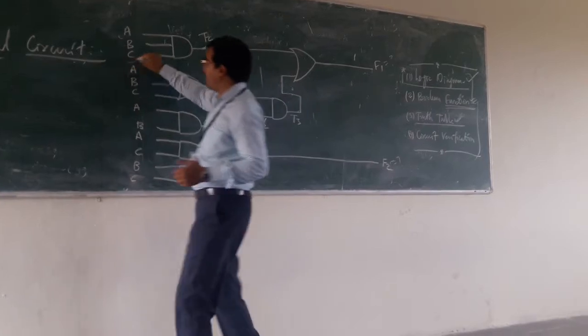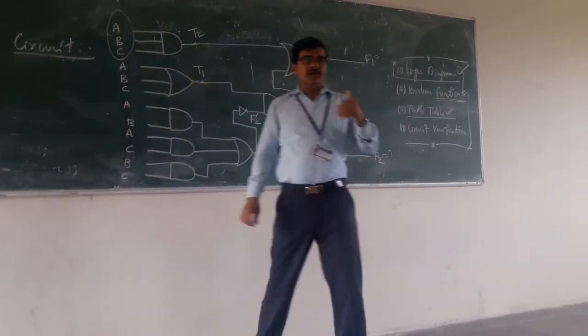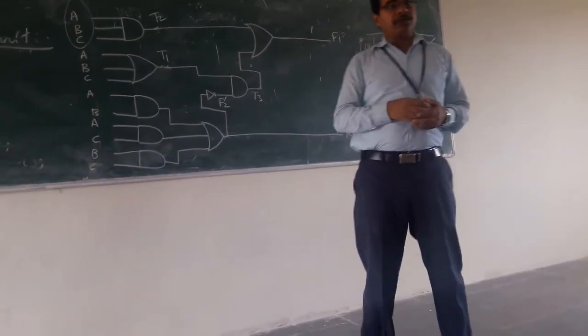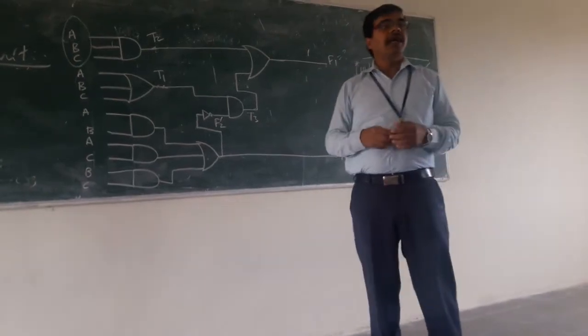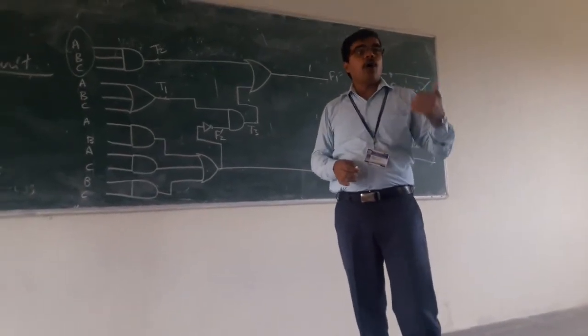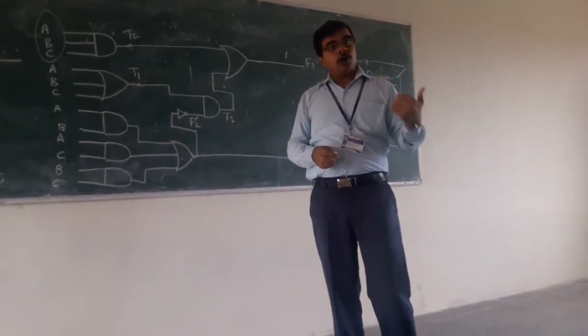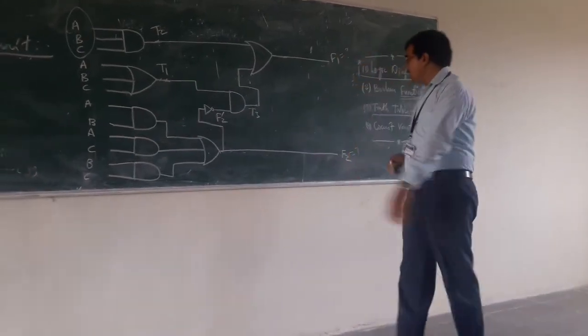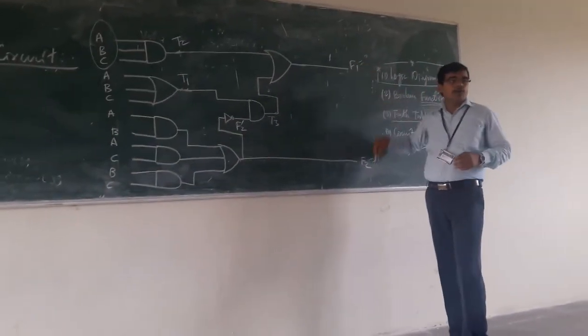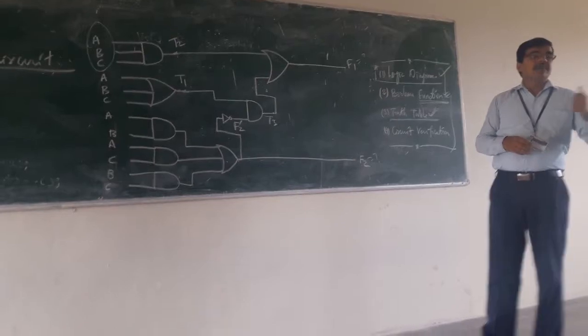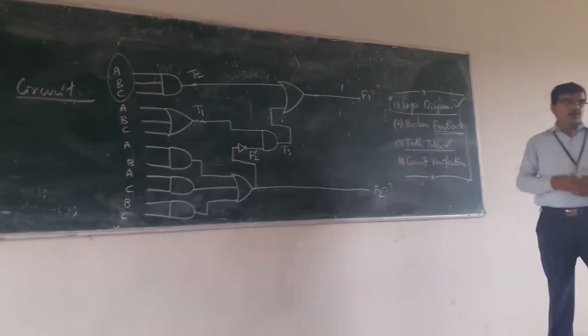As you are having three inputs A, B, C, the different combinations that are possible is 2 to the power 3, that is 8. So 8 different combinations are possible. For those 8 input combinations, what is the different output that you are having at different locations? That you have to do now.